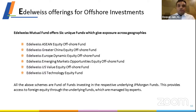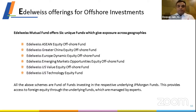Our six schemes include a US Value Fund, a recently launched US Technology Fund, an ASEAN Fund investing in ASEAN countries, a Greater China Fund, a China Plus Fund covering Hong Kong, Taiwan, and non-mainland China, a Europe Dynamic Fund offering access to eurozone companies, and an Emerging Market Opportunities Fund. Each has different dimensions and investment objectives. Today I'll restrict my talk to overall global investment but will highlight a couple of schemes that have seen strong investor interest in the last six to nine months.